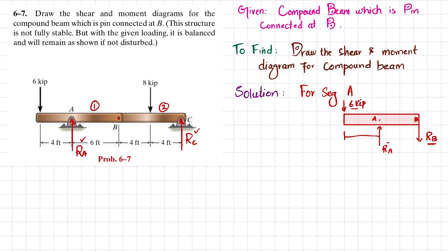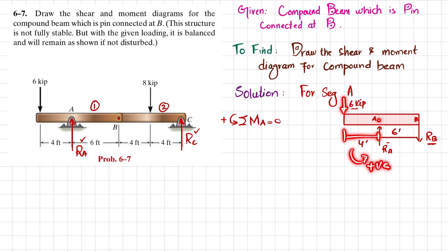The distance from the end to A is 4 feet and the distance from A to B is 6 feet. We can find RA and RB using equilibrium conditions. Taking the sum of all moments about point A equal to zero, with counterclockwise moments as positive.